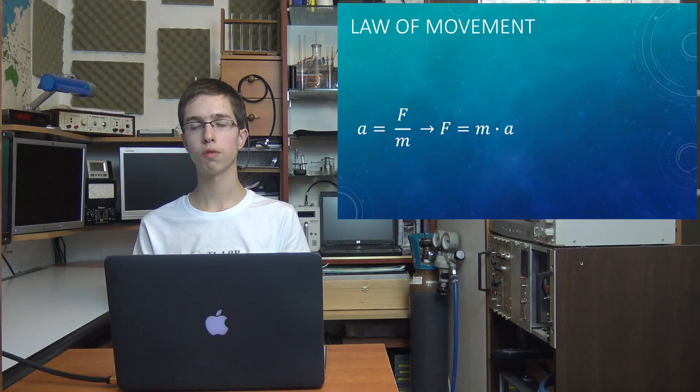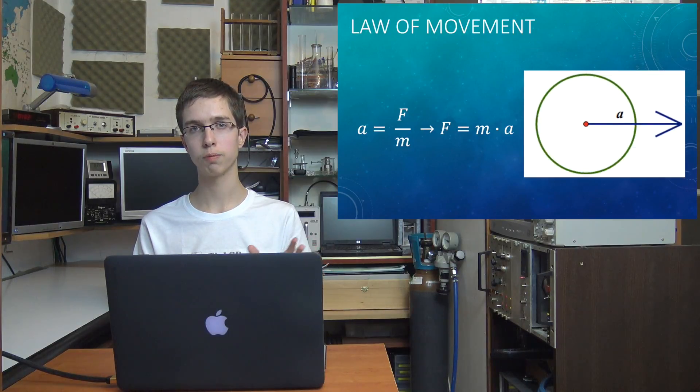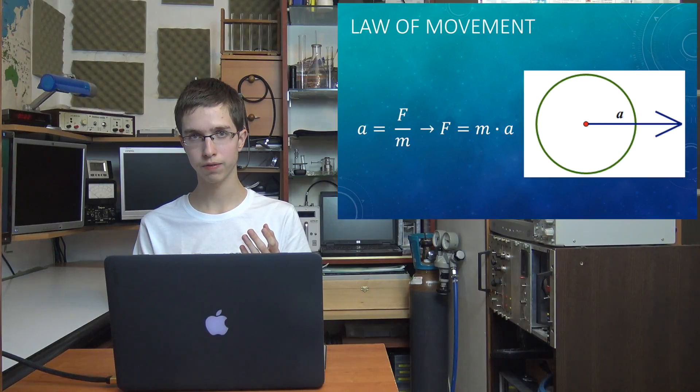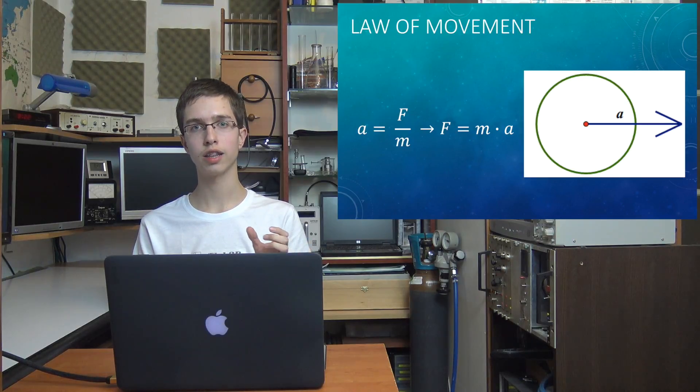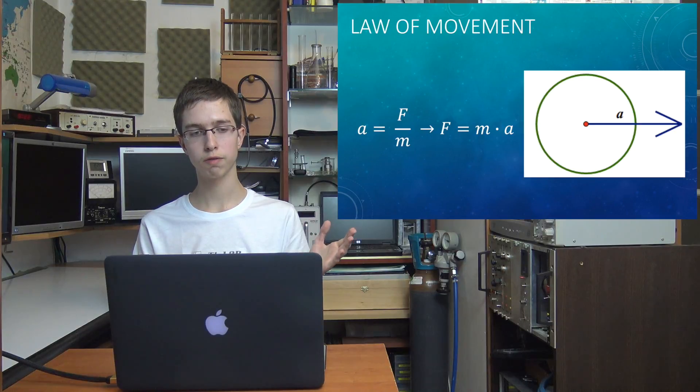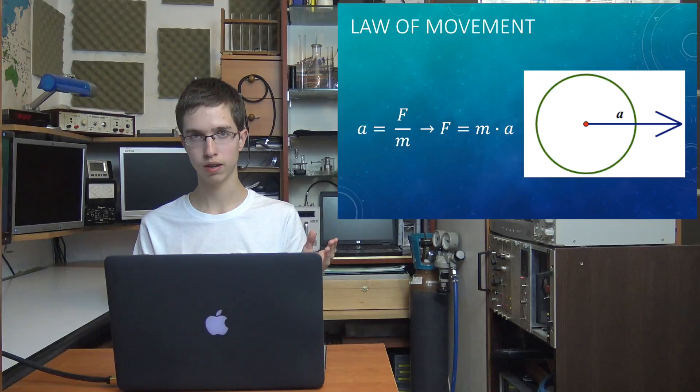The second law is the law of movement. It says that if a force acts on the body, then it speeds up, we say accelerate. So acceleration and force are directly proportional, but acceleration and mass are inversely proportional, which you can see in the formula that acceleration is force divided by mass of body.